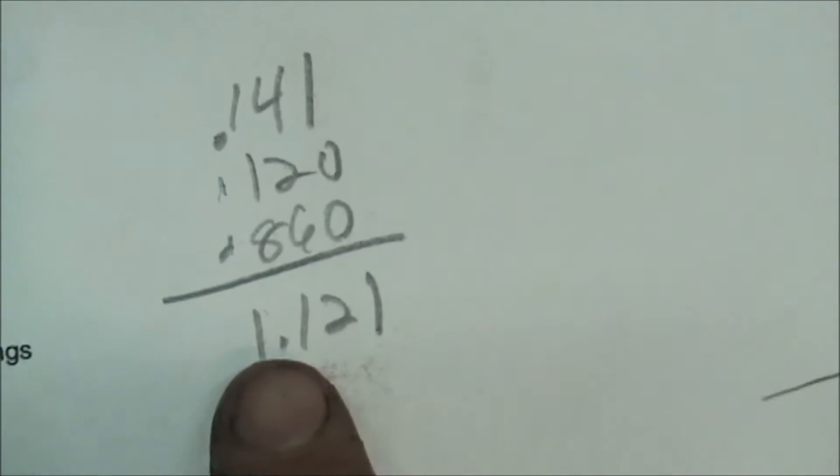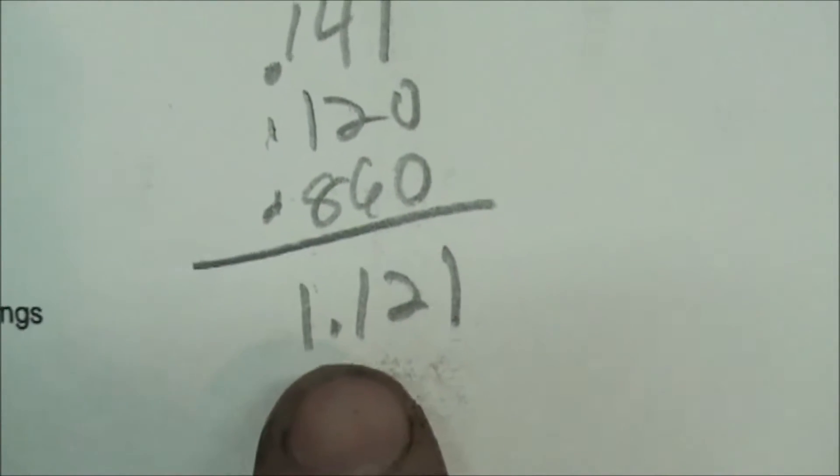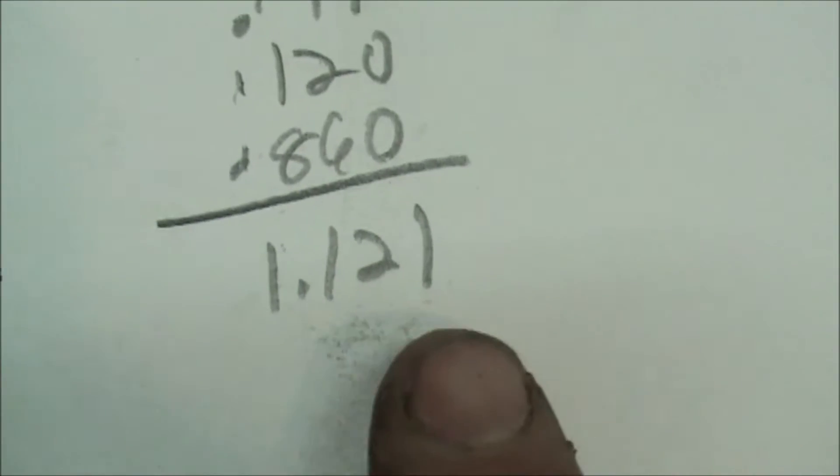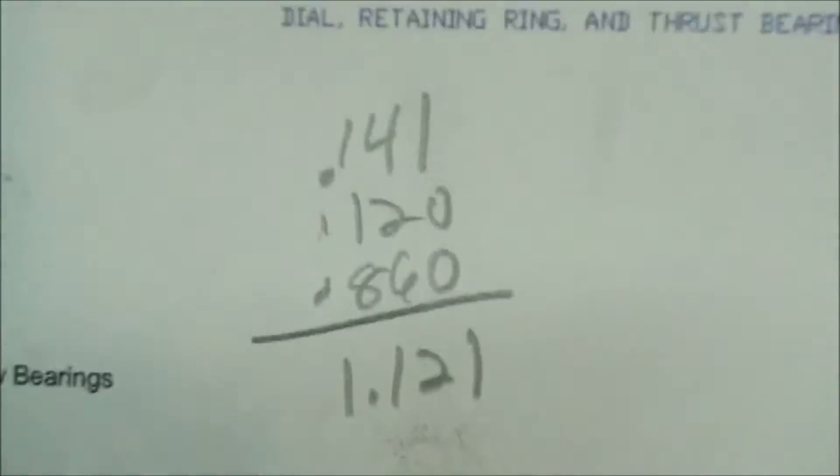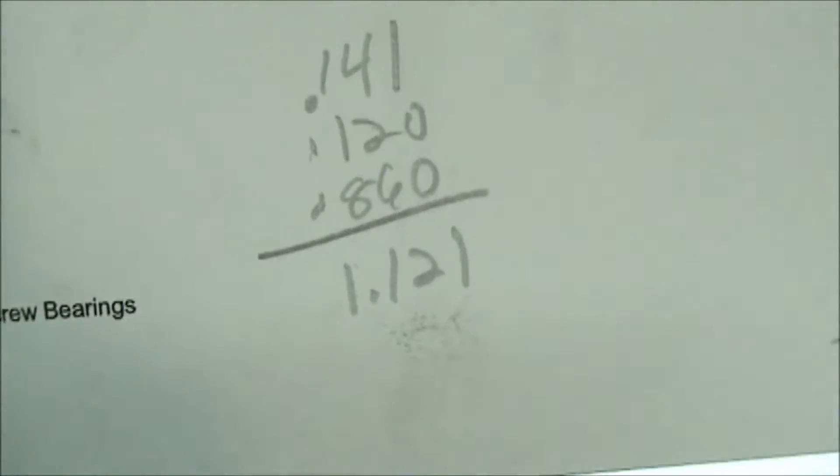Okay, we double checked all our measurements and I come out with 1.121 for all the dimensions I need. That's the bare minimum. We're gonna go a thousandth over that, so we're gonna be going at the very least 1.122.